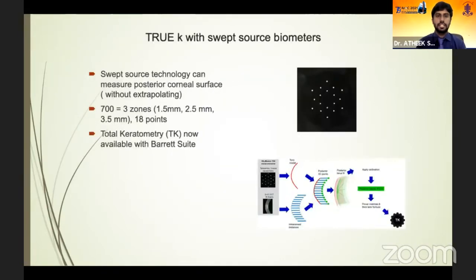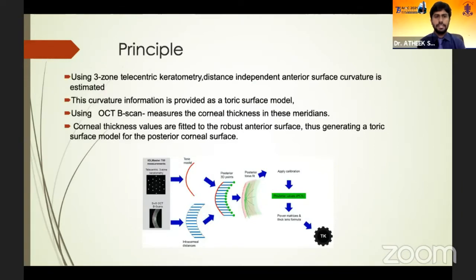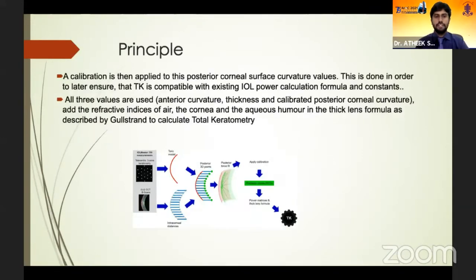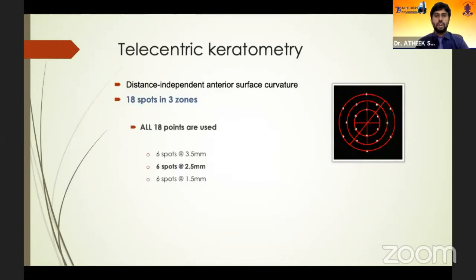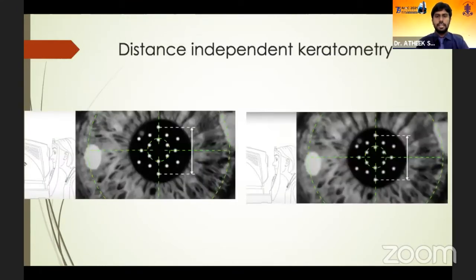With newer swept source-based biometers, we can actually measure the posterior cornea without extrapolation. These use a distance-independent measurement of the anterior corneal surface, and curvature information is provided on a toric surface model. Using OCT B-scan, the posterior cornea is measured at about 18 points, fitted onto the anterior surface, and a toric surface model is generated. Using refractive indices of air, cornea, and aqueous with Gullstrand's principle, total keratometry of the cornea is calculated. Telecentric keratometry means that slight patient distance offset still gives precise values.